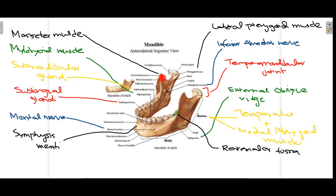Next we have the coronoid process, which is the place where the masseter muscle — one of the muscles of mastication — is attached. At the neck of the condylar process there is a slight depression known as the pterygoid fossa or pterygoid fovea, and this is the place where the lateral pterygoid muscle is inserted, which is also one of the muscles of mastication.